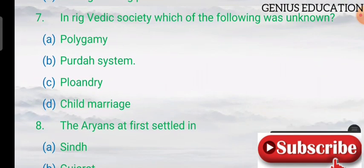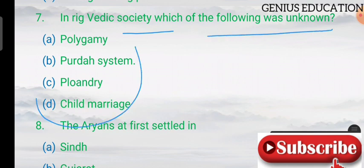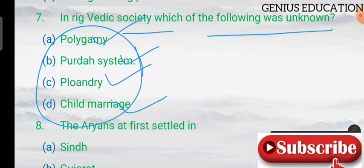Question 7: in Rig Vedic society, which of the following was unknown? Options are polygamy, the fratriarchy system, polyandry, and child marriage. The answer is the fratriarchy system.